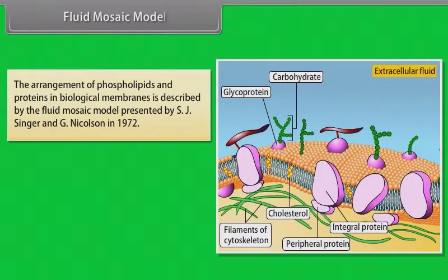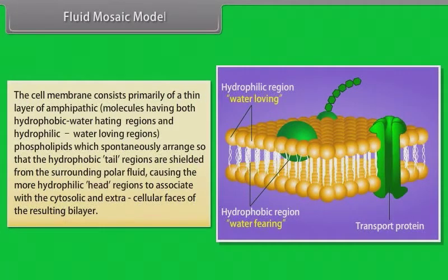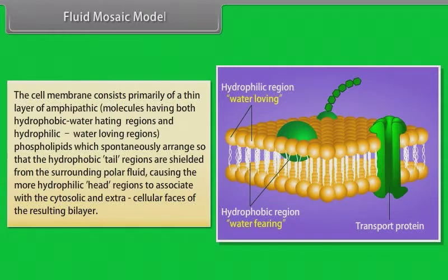Fluid mosaic model. The arrangement of phospholipids and proteins in biological membranes is described by the fluid mosaic model, presented by S.J. Singer and G. Nicholson in 1972. The biological membranes can be considered as a two-dimensional liquid where all lipid and protein molecules diffuse more or less easily. The cell membrane consists primarily of a thin layer of amphipathic molecules having both hydrophobic (water-hating) regions and hydrophilic (water-loving) regions. Phospholipids spontaneously arrange so that the hydrophobic tail regions are shielded from the surrounding polar fluid, causing the more hydrophilic head regions to associate with the cytosolic and extracellular phases of the resulting bilayer.